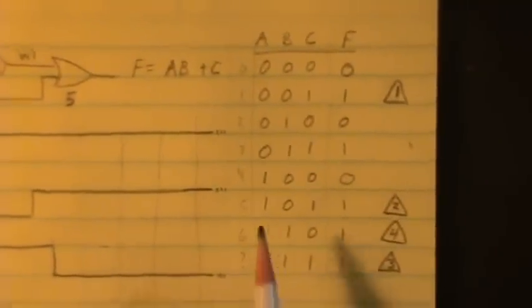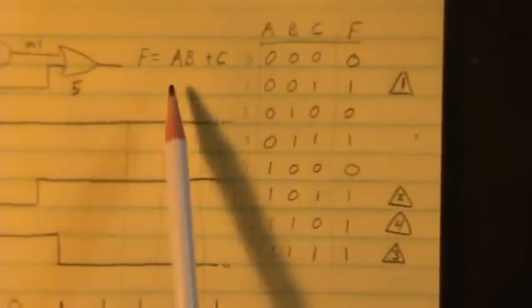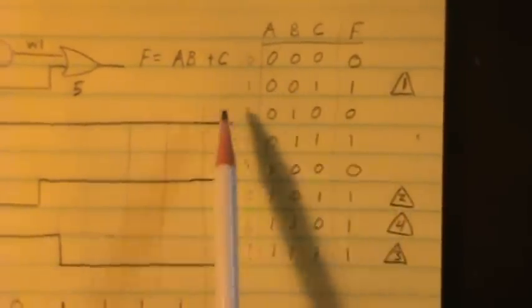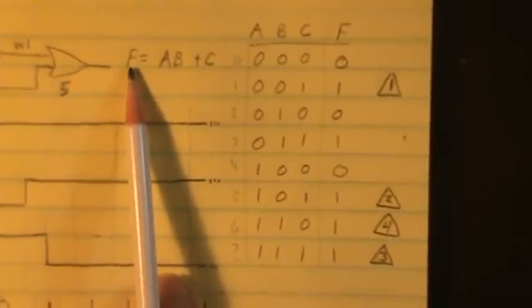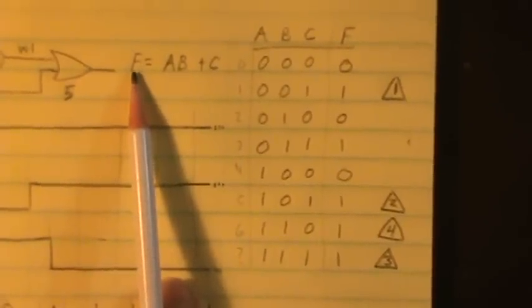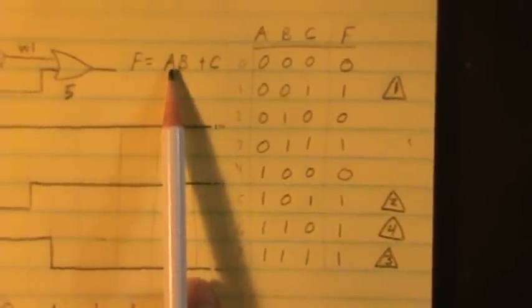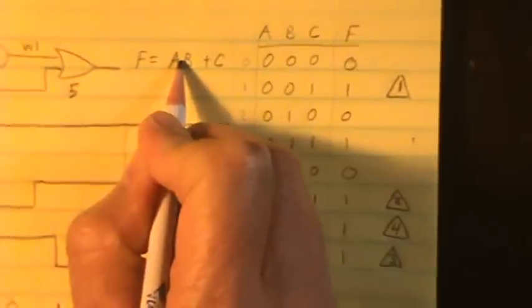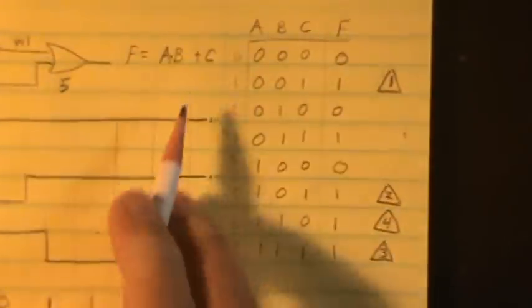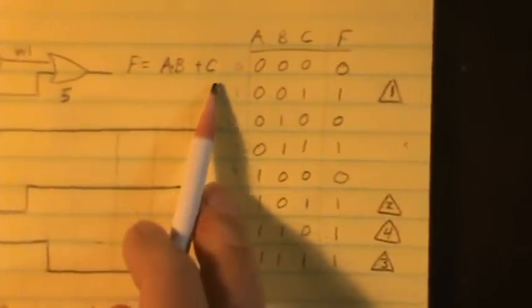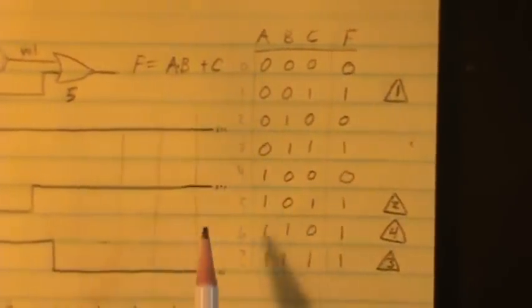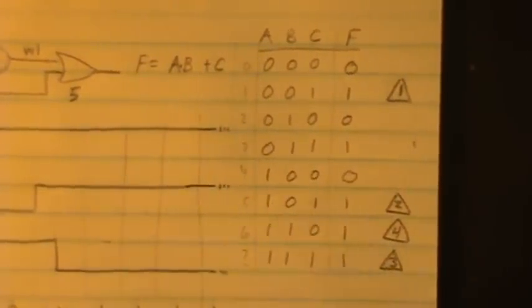Just to cover everything, let's make sure we know what our truth table is going to look like. We're going to describe the output F equals A AND B OR C. So we can make a truth table.